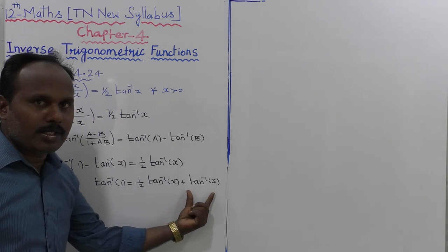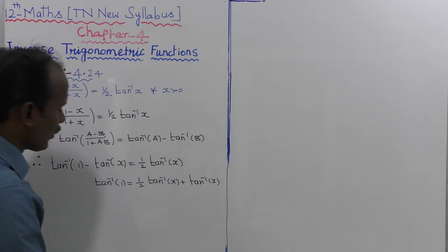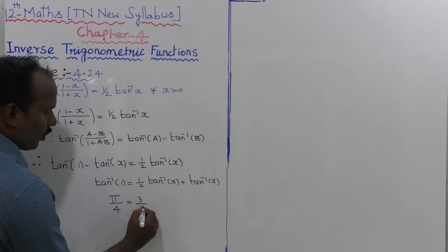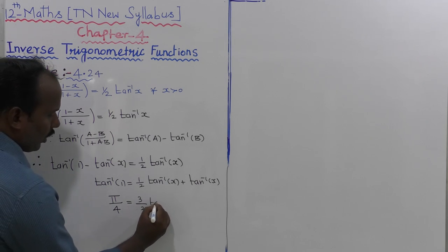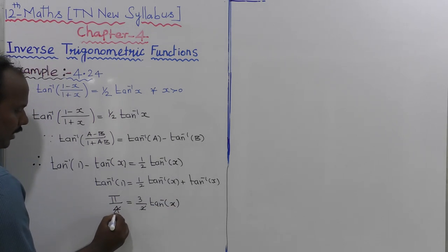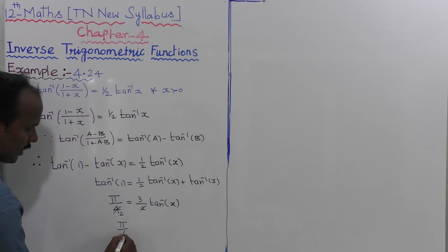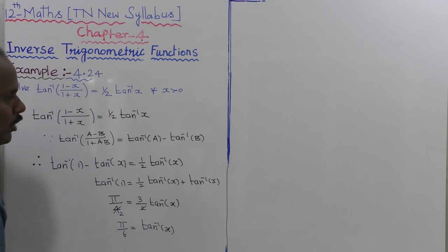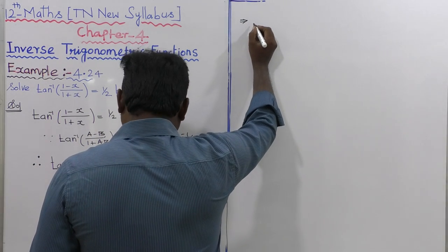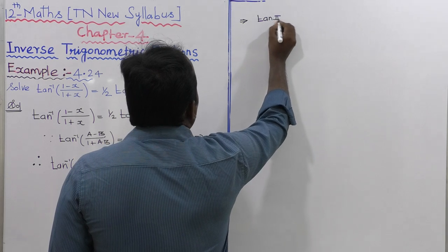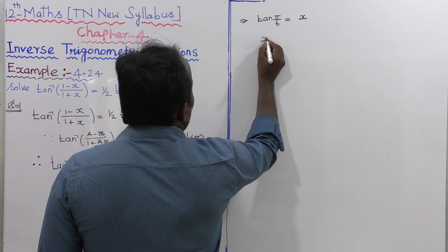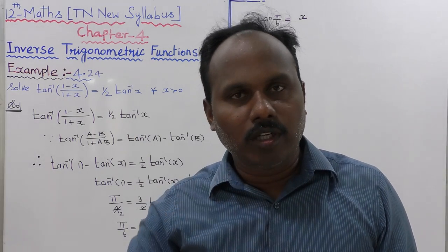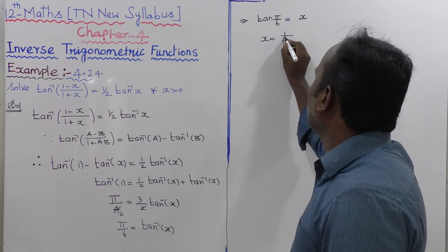Now 1 by 2 plus 1 equals 3 by 2, so tan inverse of 1 equals 3 by 2 into tan inverse of x. Since tan inverse of 1 equals pi by 4 (45 degrees), we get pi by 4 equals 3 by 2 into tan inverse of x. Cross multiplying gives tan inverse of x equals pi by 6, which means x equals tan of pi by 6, that is 30 degrees. So x equals 1 divided by root 3.